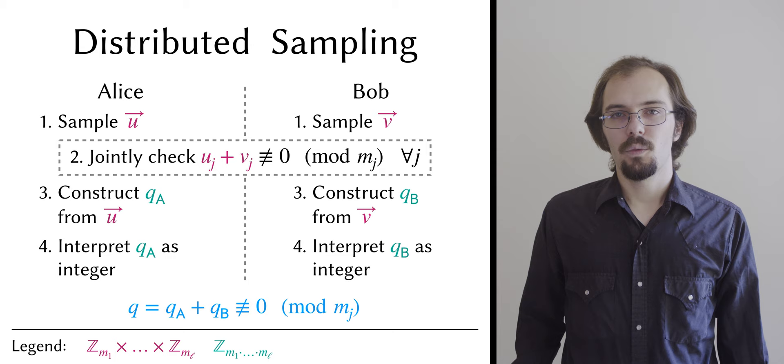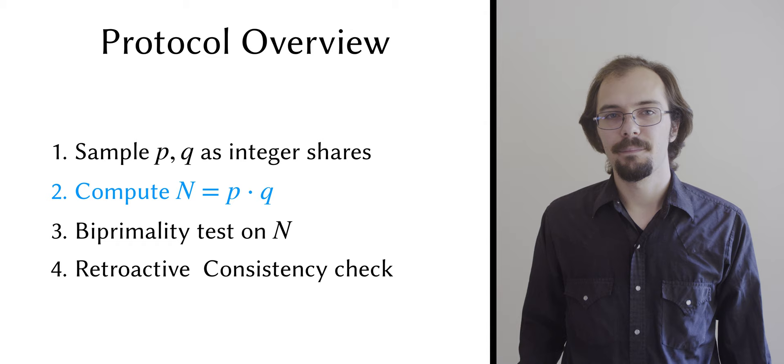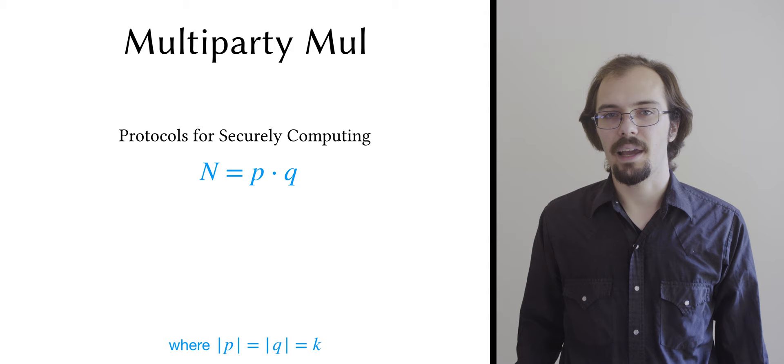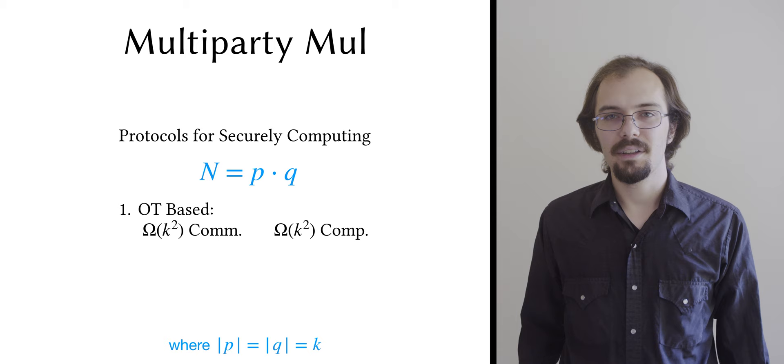Now, once the parties have shares of p and q, they must multiply them together to form shares of a bi-prime n. This is where all prior works have encountered a bottleneck, in the form of multiplication protocols over length k inputs. Typically, OT-based multiparty multiplication protocols have at least quadratic computation and communication complexity in the bit length of their inputs.